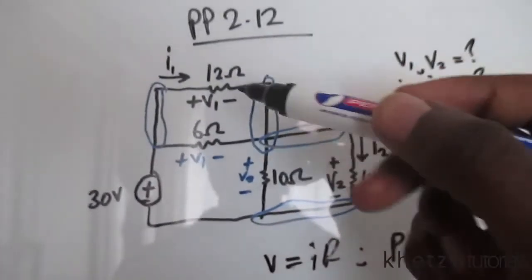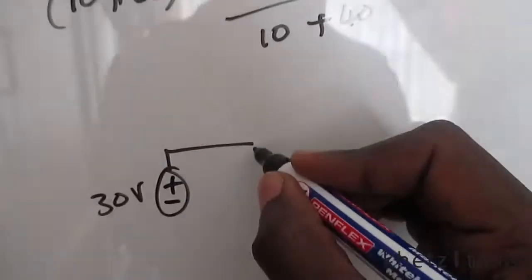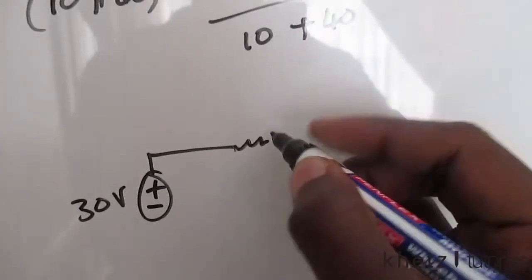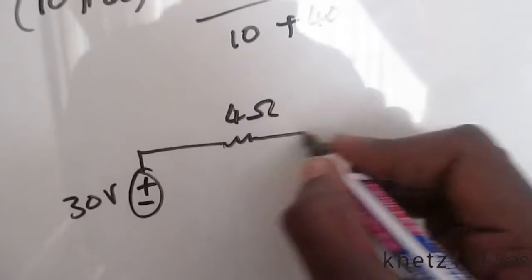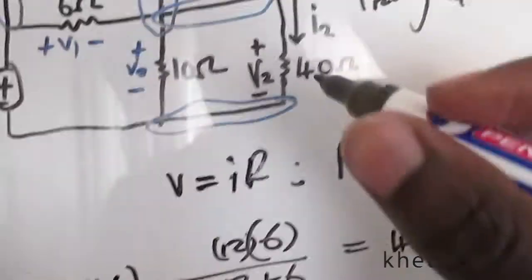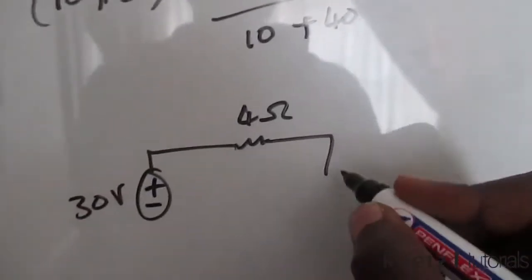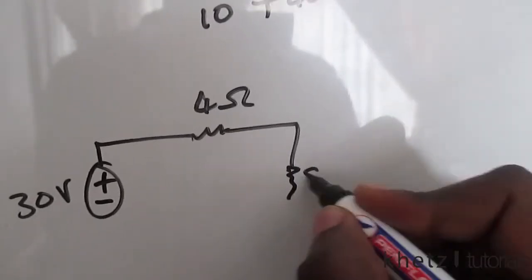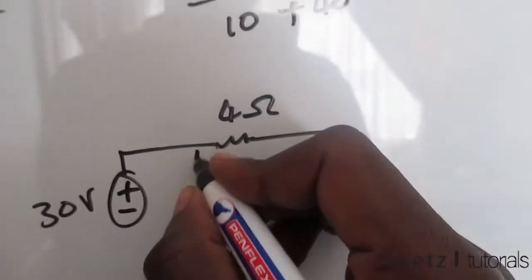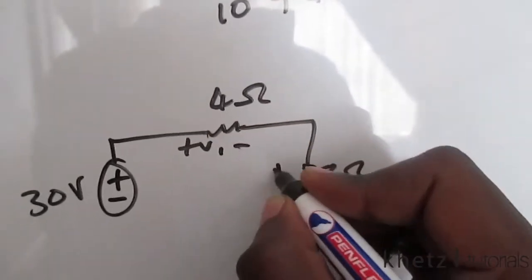Now let's draw the simplified circuit. The combination of the 12 ohm and 6 ohm gives 4 ohms, and the combination of the 10 ohm and 40 ohm gives 8 ohms. We place the voltages across each equivalent resistor.